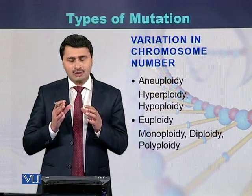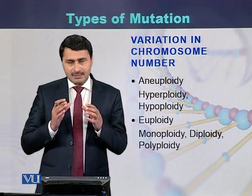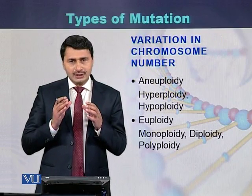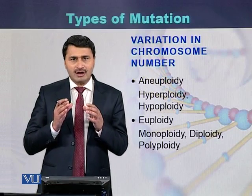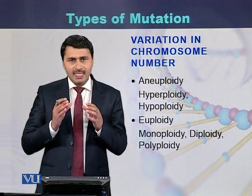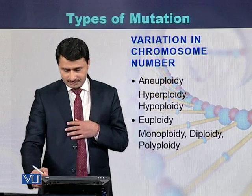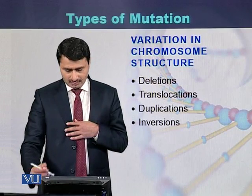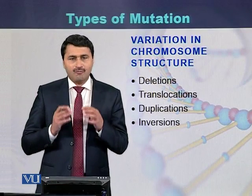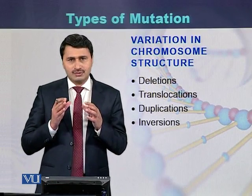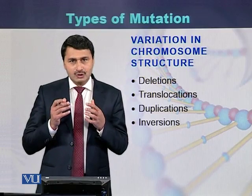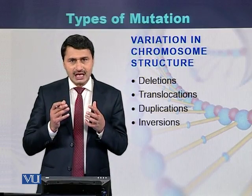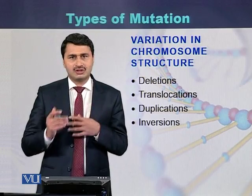Variation in chromosome number includes examples such as aneuploidy and euploidy, each of which has subcategories. Variation in chromosome structure can include deletions, duplications, insertions, and translocations.